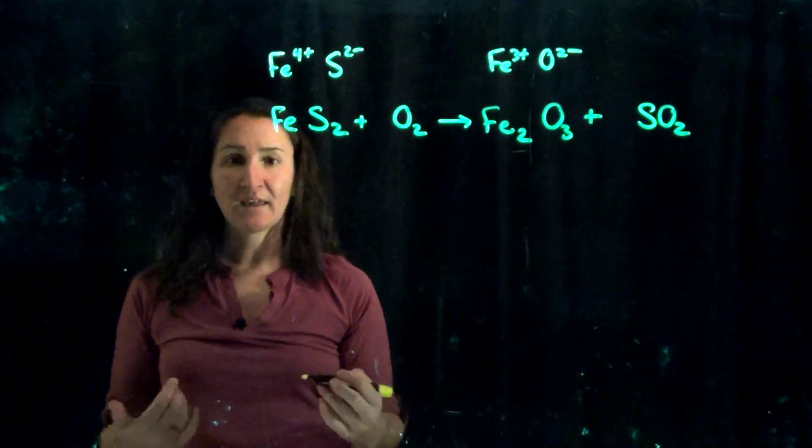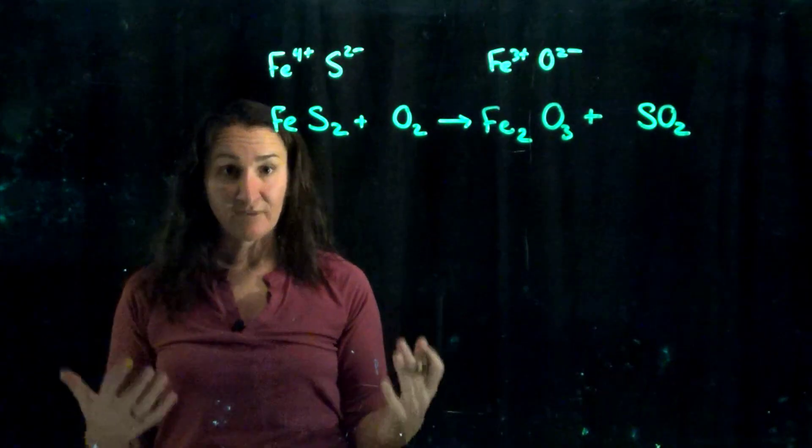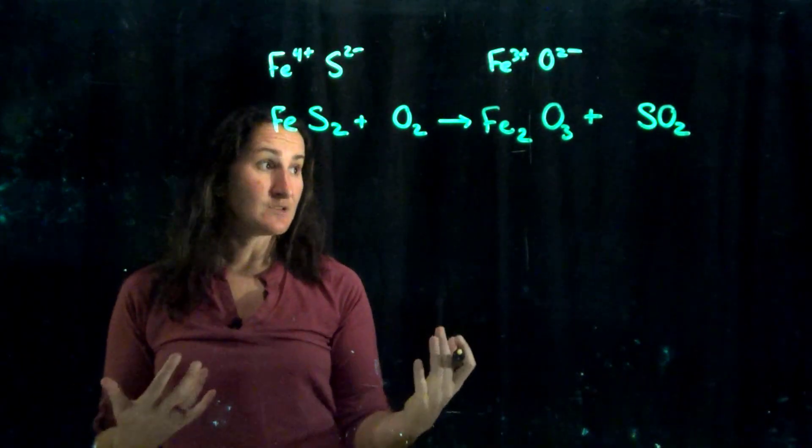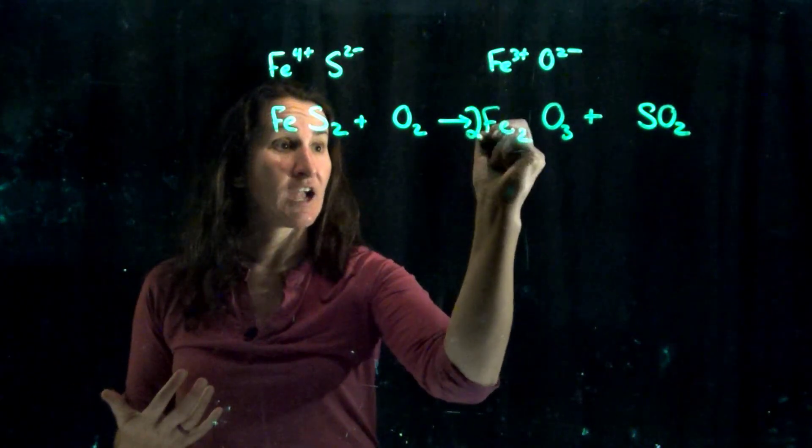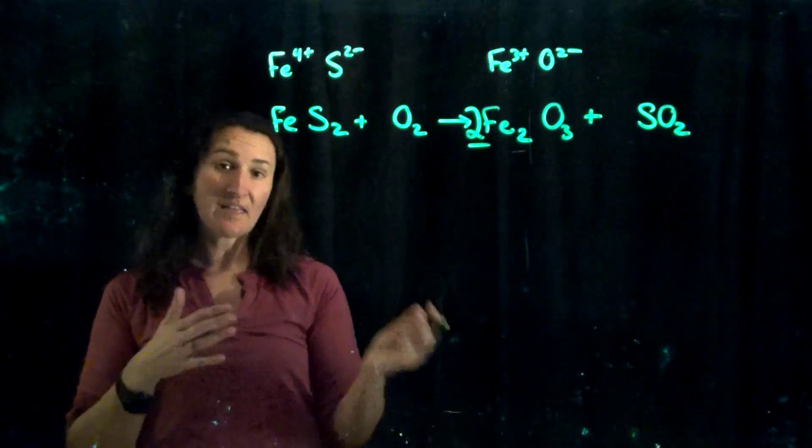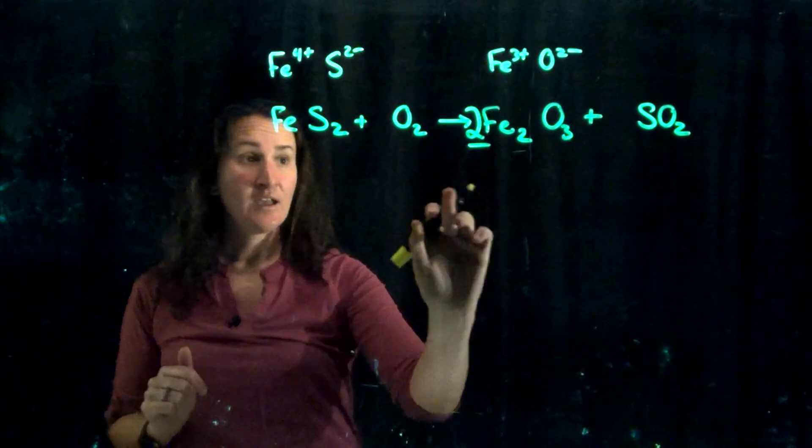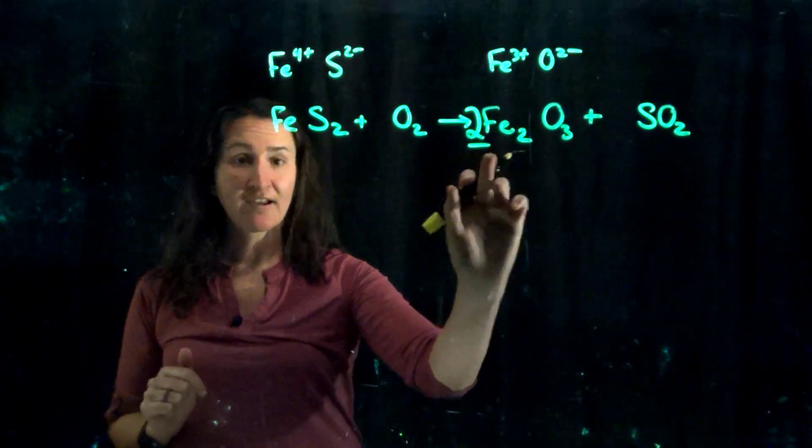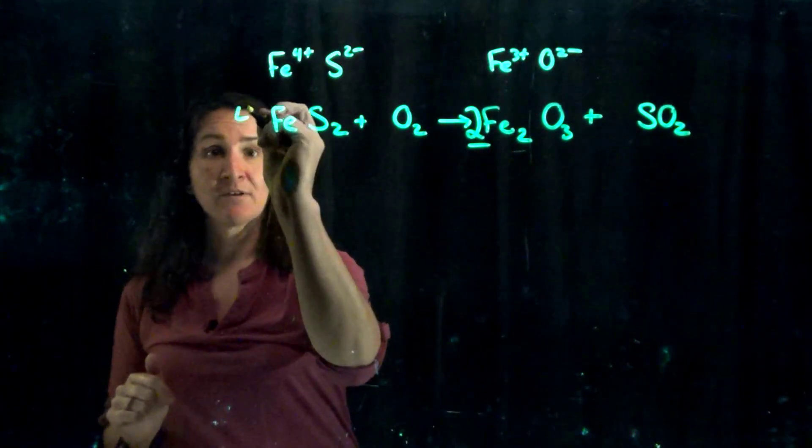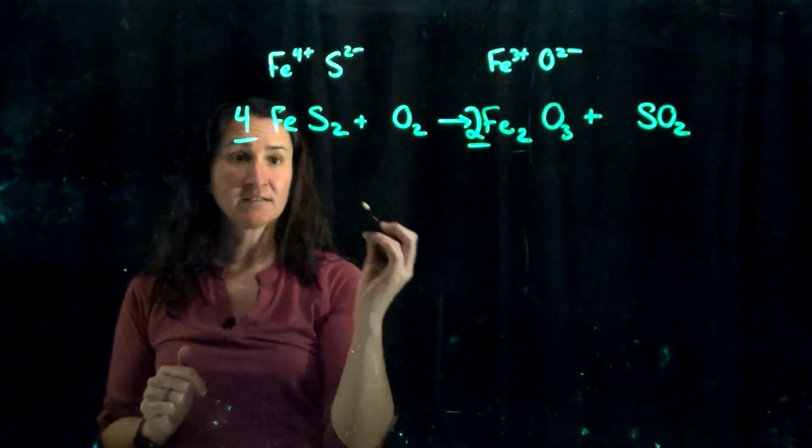As I'm doing that then I'm just going to try, I'm going to start out with two and see if that balances things. So meaning I've got two of these, which that means I need how many irons? I need four, so I'll put a four here. Four irons, four irons.